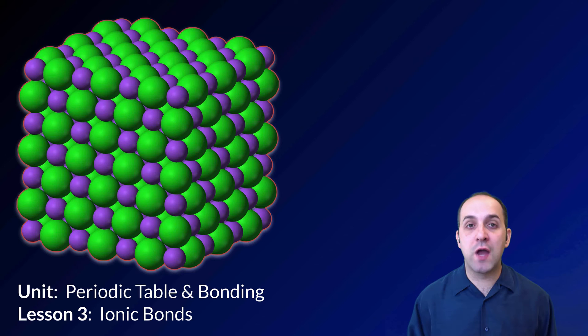Hi and welcome to lesson three in our periodic table and bonding unit. Our first two lessons looked at the periodic table. Now let's look at the bonding part of this unit. We're going to start with the discussion of ionic bonds and what it means to be an ionic bond.